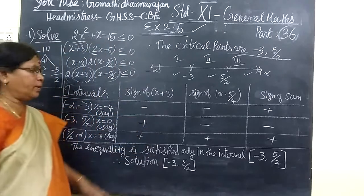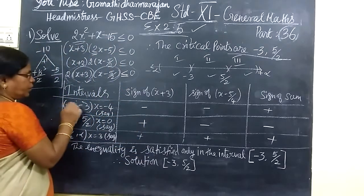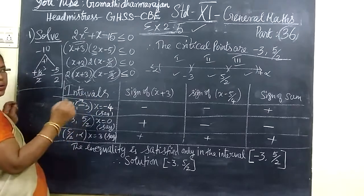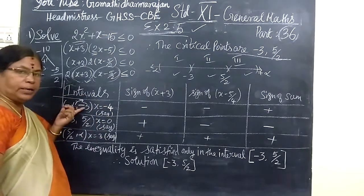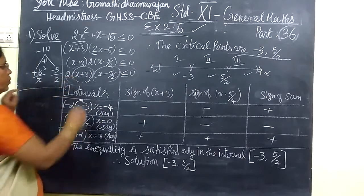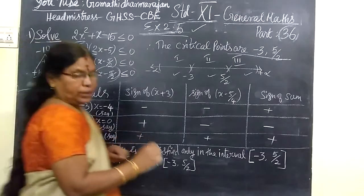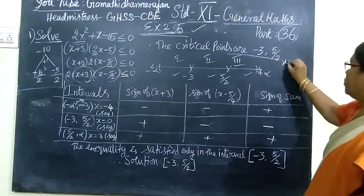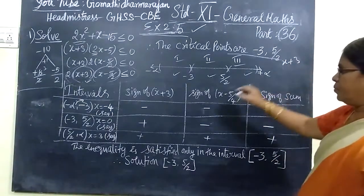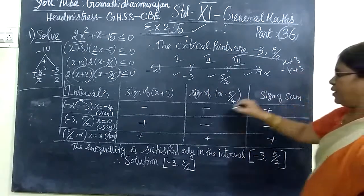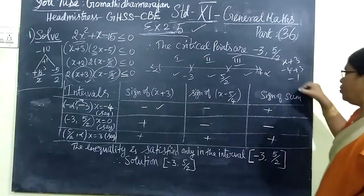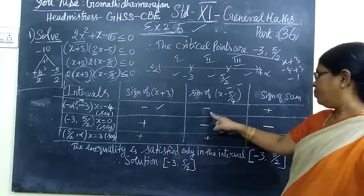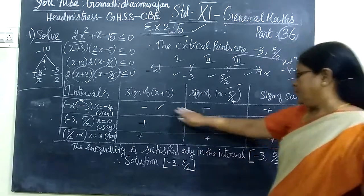So, the intervals are minus 3. If you are in between minus infinity to minus 3, you are taking any number. You say x is equal to minus 4. You can substitute this value. So, my x plus 3 factor. So, here you write x plus 3. You substitute x equal to minus 4. So, minus 4 plus 3 negative sign. We want only the sign. So, minus sign.